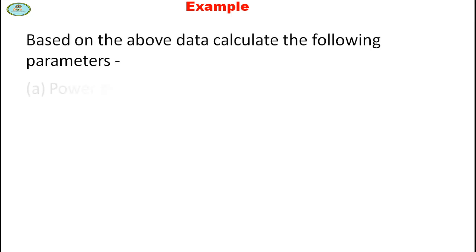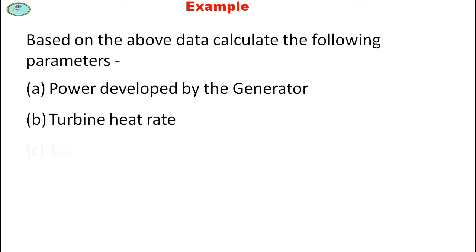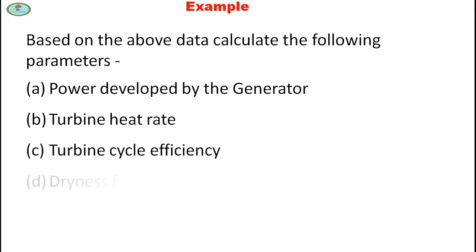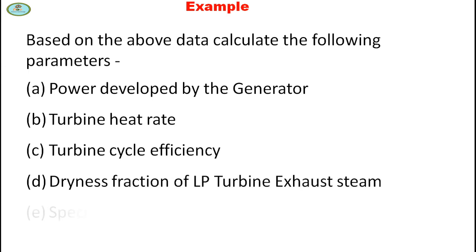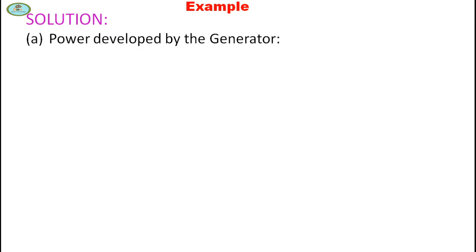Based on the above data, calculate: (1) power developed by the generator, (2) turbine heat rate, (3) turbine cycle efficiency, (4) dryness fraction of LP turbine exhaust steam, and (5) specific steam consumption of the turbine cycle. Power developed by the generator equals turbine output multiplied by generator efficiency (Equation 1).